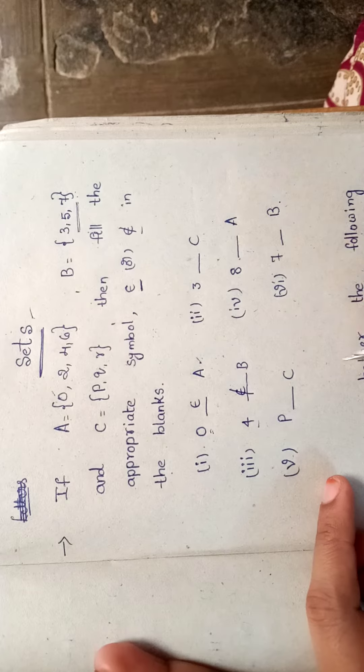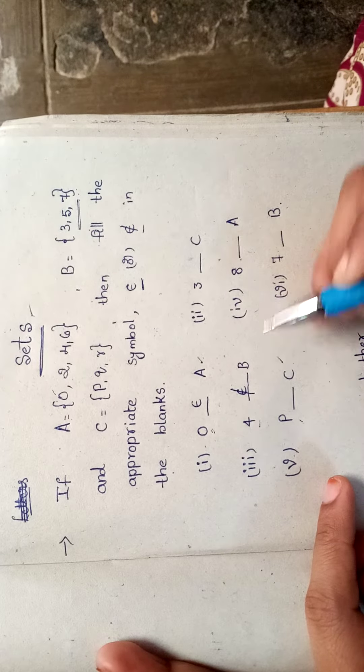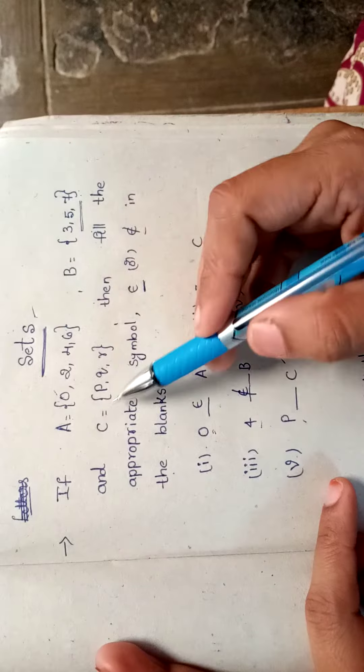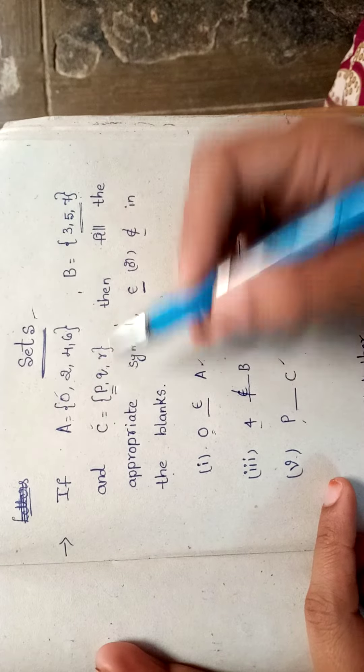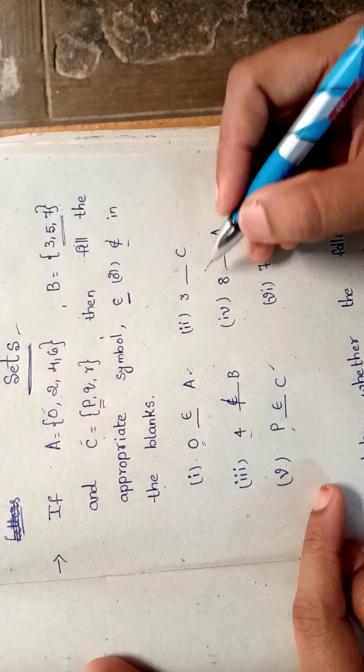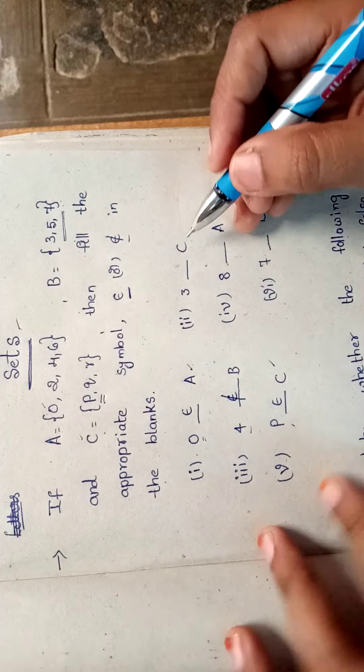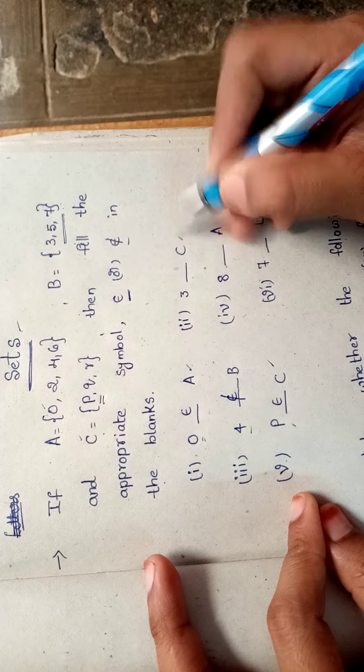Next, P is an element and C is a set. Let us check the C set. Here is P. So we can write P belongs to C. Next, three. Let us check if three is in the set C or not.